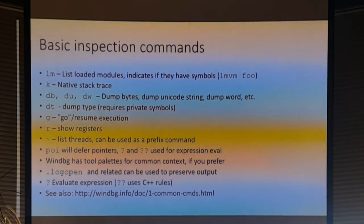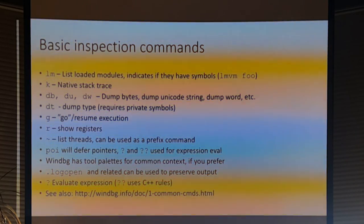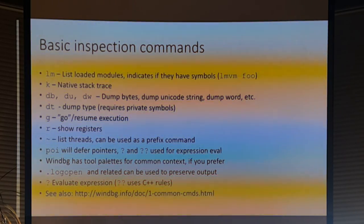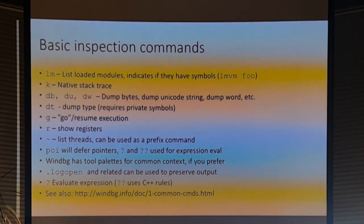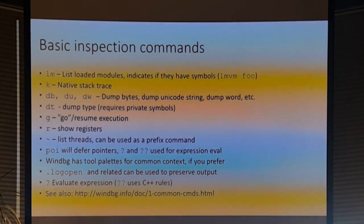G is go. You can script commands to run on breakpoints — a really common thing is to set a breakpoint, evaluate a condition, and if true do something, otherwise resume execution. For example, you might only want to break on a CreateFile call if it's a file you care about — write a condition that says if the filename matches this, then break, otherwise just go. R shows registers.